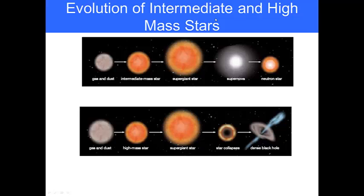What is the evolution of high and intermediate mass stars? In intermediate mass stars, you have a collection of gas and dust that become an intermediate mass star. As this fuel is consumed, it becomes a supergiant, then a supernova, then a neutron star. In a high mass star, you have a larger ball of gas and dust that form together to create a high mass star. When the fuel starts to run out, it becomes a supergiant. The star collapses and then it becomes a black hole.